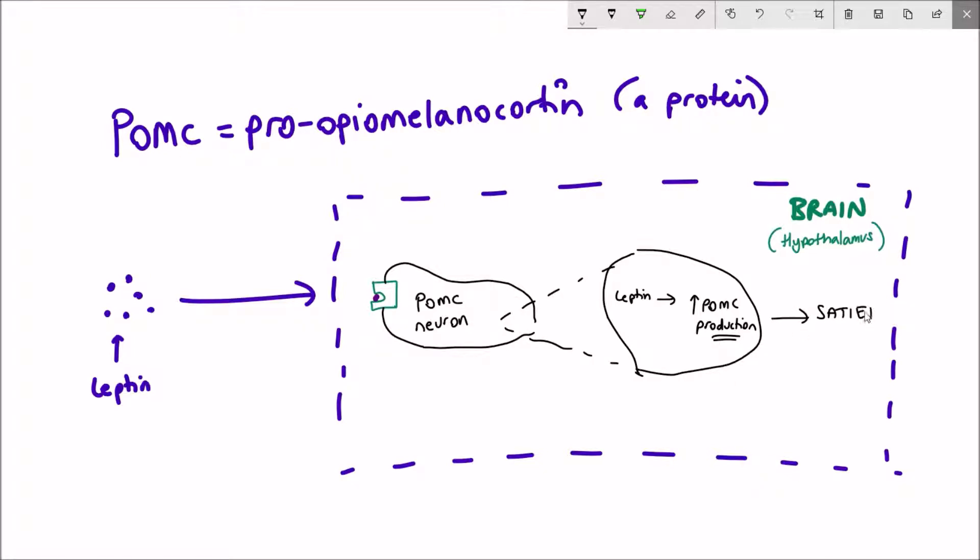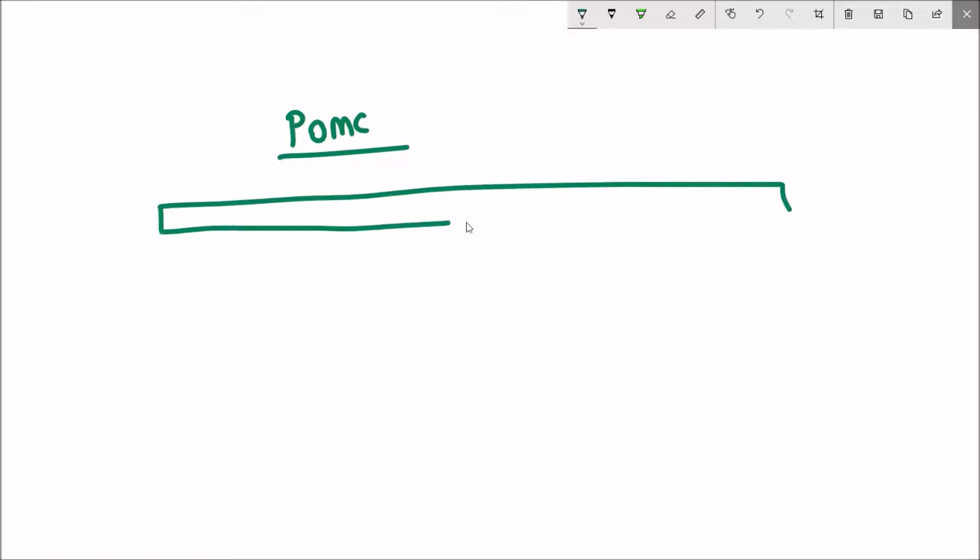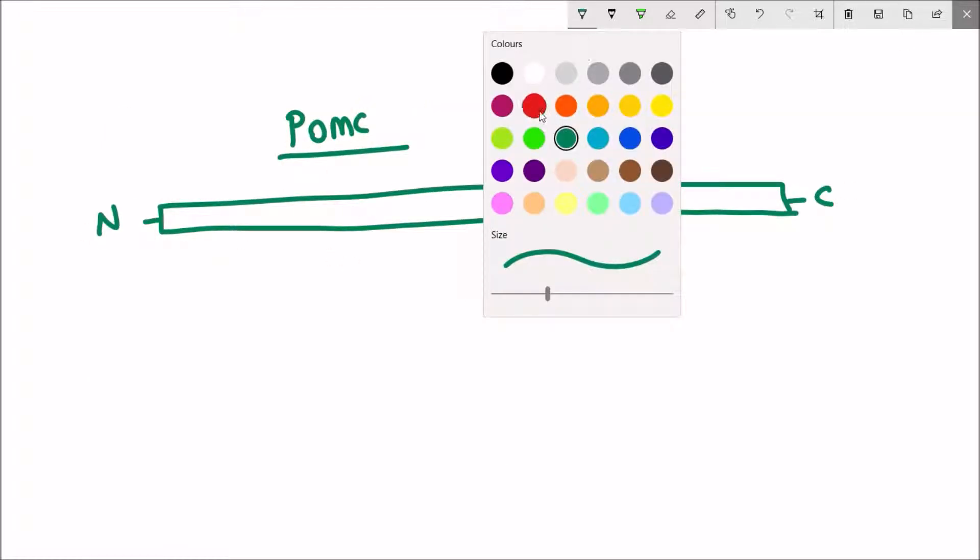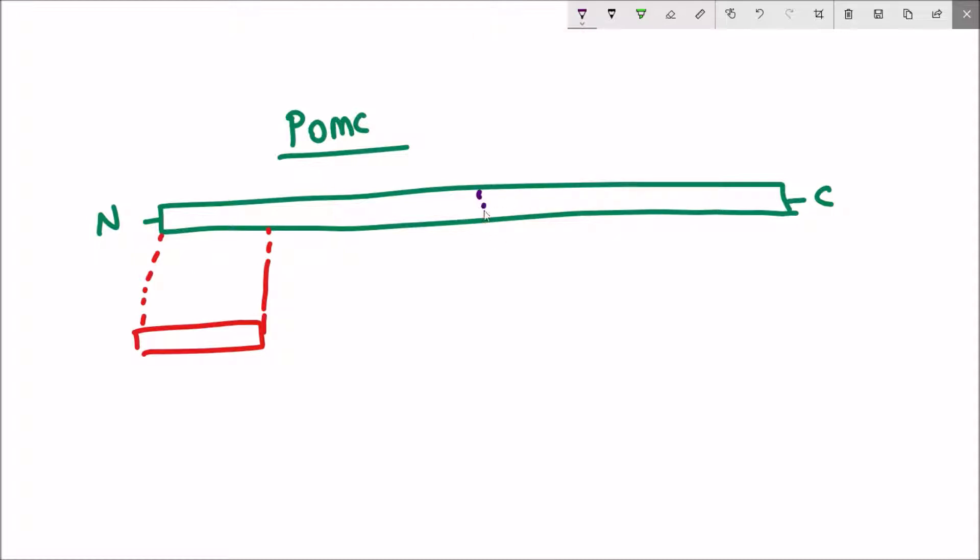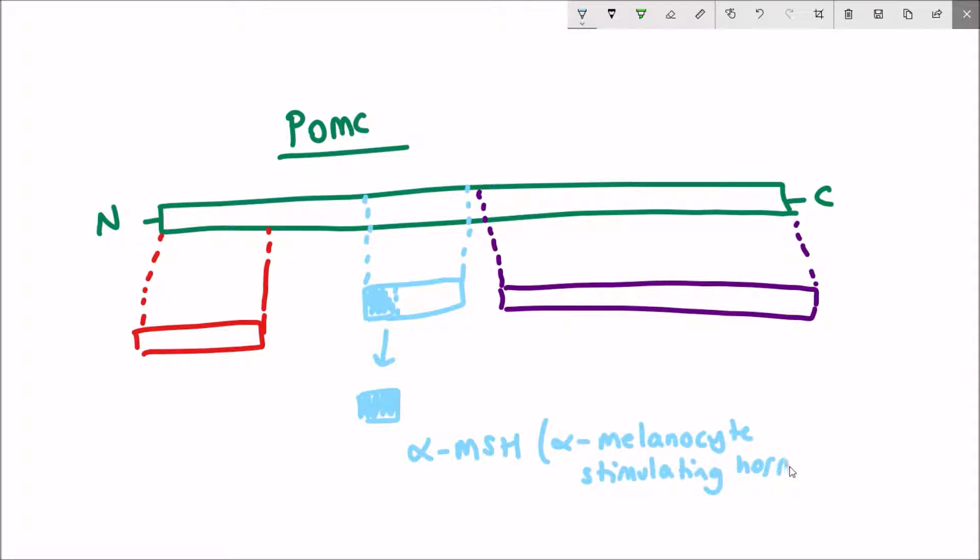But how does POMC achieve this? POMC is a protein that gets chopped up into different smaller peptides with different functions. The key peptide is alpha MSH, which stands for alpha melanocyte stimulating hormone.